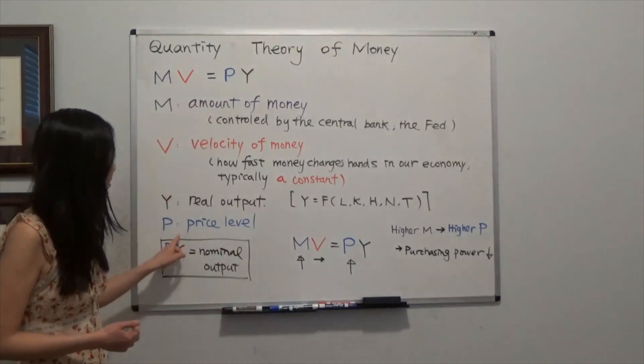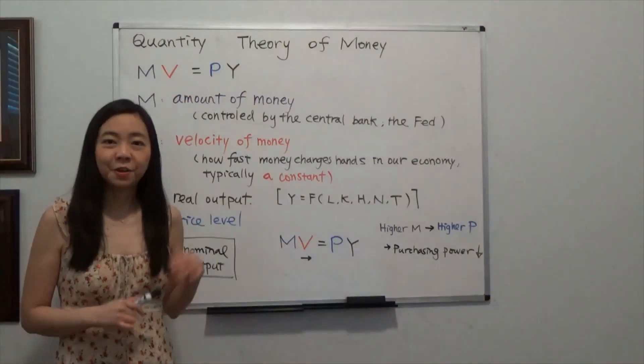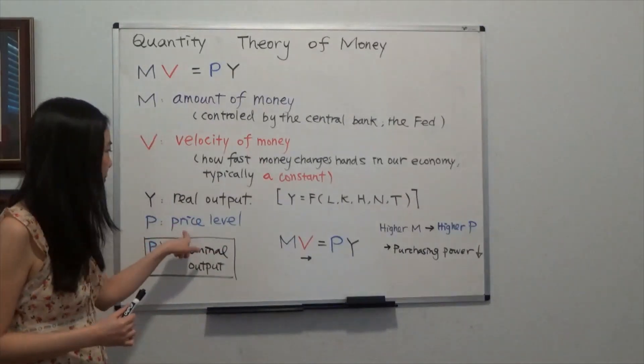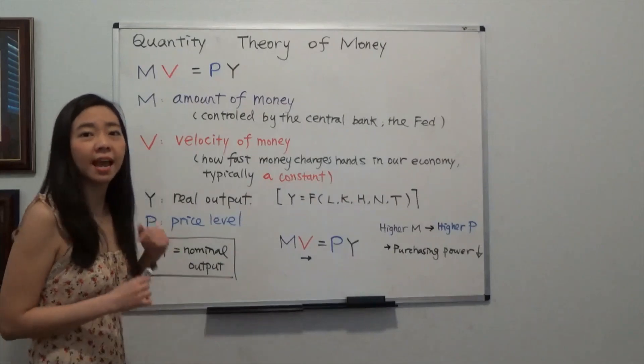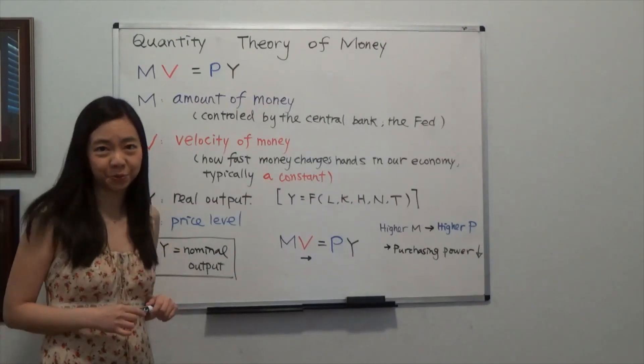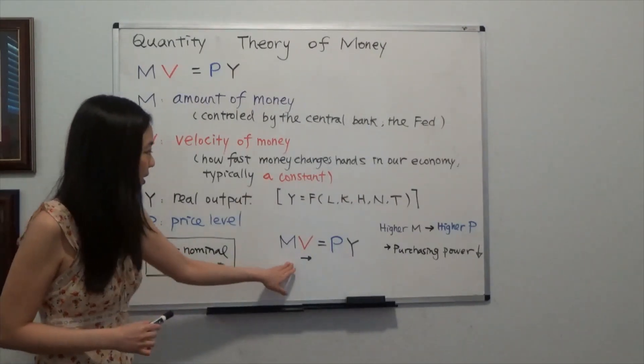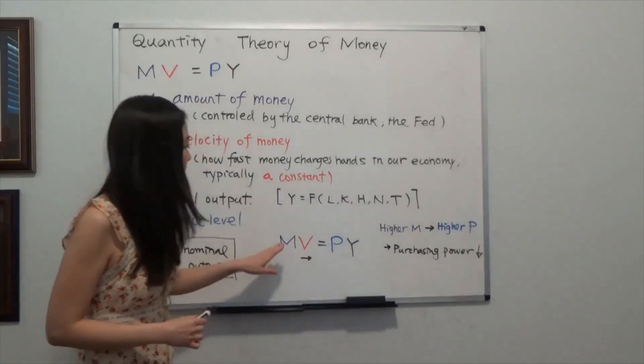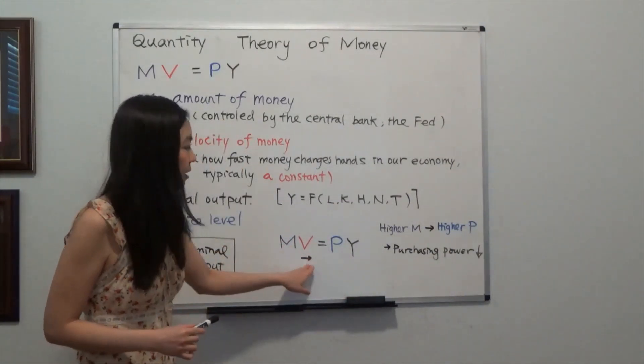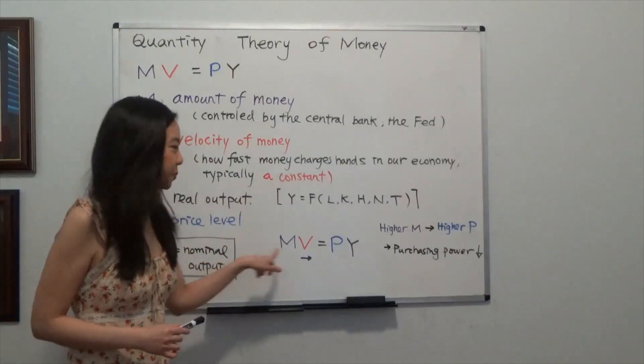Finally, P stands for the price level. Now since P is the price level and Y is real output, you multiply them and it will give you the nominal output. So this equation MV equals PY tells us that the amount of money times the velocity of money will give you the nominal output.